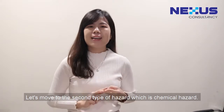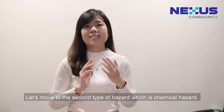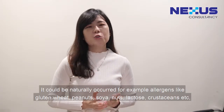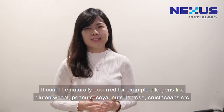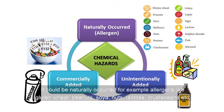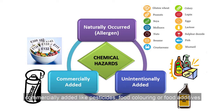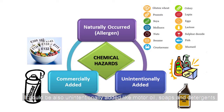Let's move to the second type of hazard, which is chemical hazard. It could be naturally occurring — for example, allergens like gluten, wheat, peanuts, soya, nuts, lactose, crustaceans, and others. Commercially added chemicals like pesticides, food coloring, or food additives. It could also be unintentionally added, like mineral oils, soaps, and detergents.